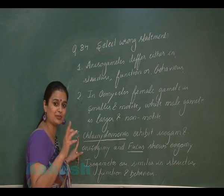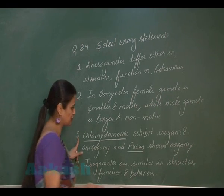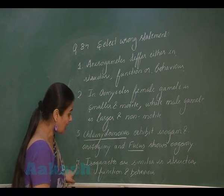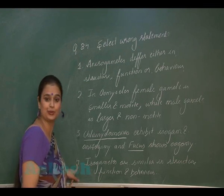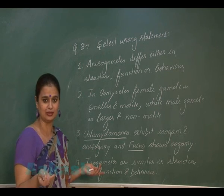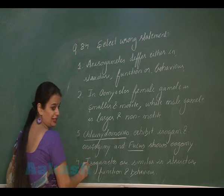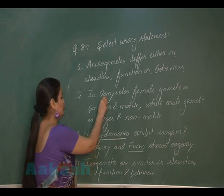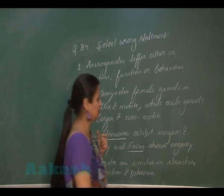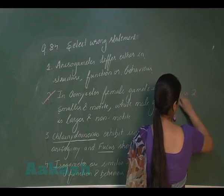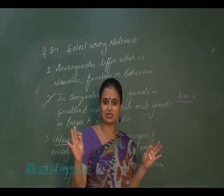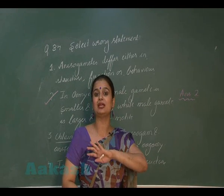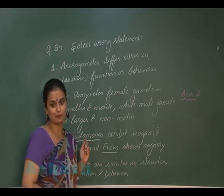Fucus shows oogamy. The last option states isogametes are similar with respect to structure, function, and behavior — that is correct. So options 1, 3, and 4 are correct. With respect to oogamous reproduction in oomycetes, option 2 is incorrect. The answer for question 84 is option 2. In oogamous reproduction, male gametes are motile and smaller, female gametes are larger and non-motile.